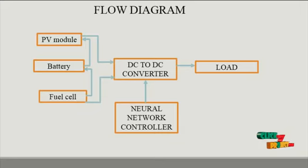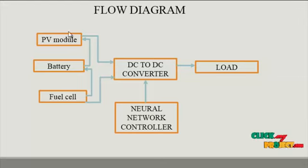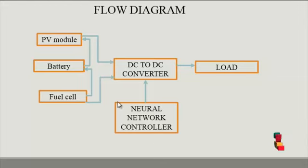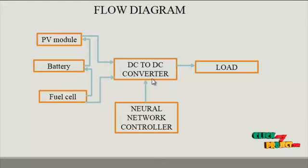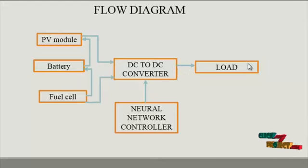Next we see the flow diagram of our product. The flow diagram consists of three input sources, one controller section, and a conversion section called the DC to DC converter. The converted supply is then fed into the corresponding load.